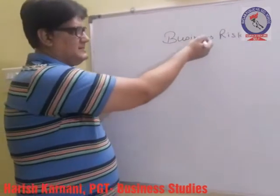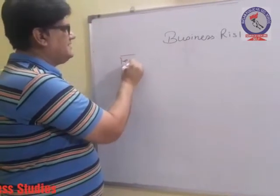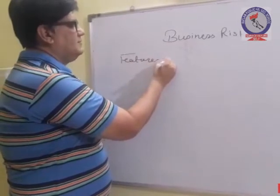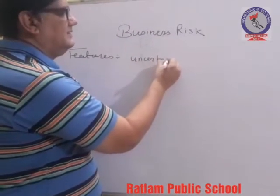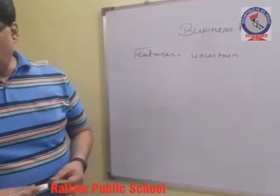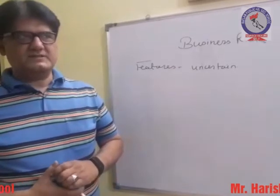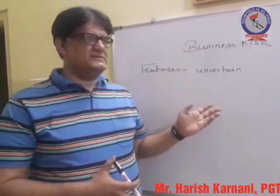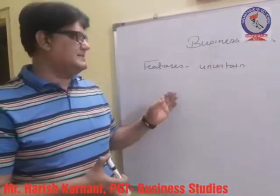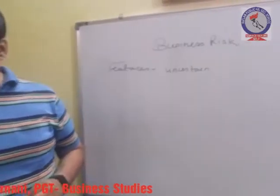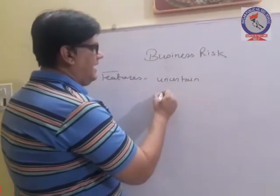Now let's discuss the features of business risk. The first feature is that business risk is uncertain — the risk arises due to uncertainties. Events are not certain, and if certain unexpected events take place which we are not expecting, risk arises due to this. So it is uncertain risk.